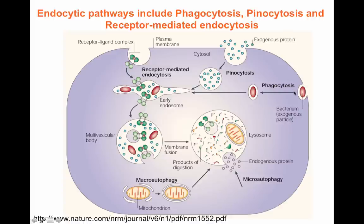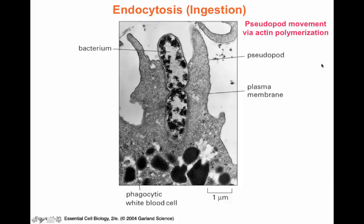The processes of endocytosis, pinocytosis, and receptor-mediated endocytosis all require clathrin to form the vesicle. Clathrin, dynamin, and the adaptin proteins are going to be used in all these mechanisms. Eventually, through the microtubule network, those vesicles generated at the plasma membrane can be transported to be fused with lysosomes.